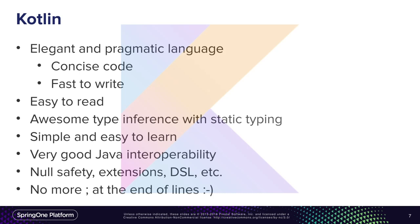Kotlin has awesome type inference with static typing. Kotlin has the same level of static typing as Java — everything is statically typed. You don't have any magic like in some JavaScript. But thanks to its clever type inference, you can write very short code — code could be as short as in Groovy, but with a fully statically typed API, and that's very important.